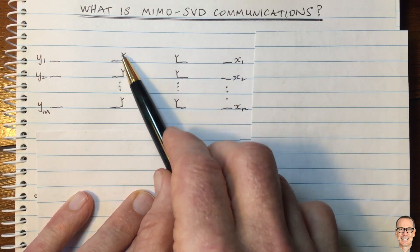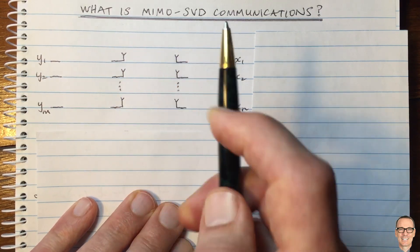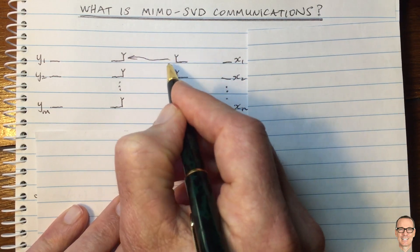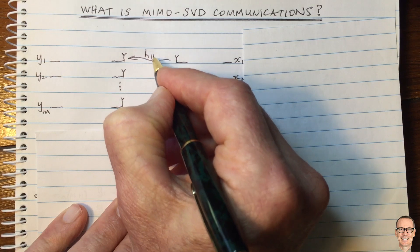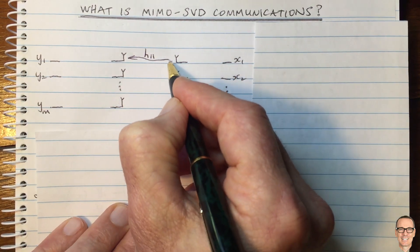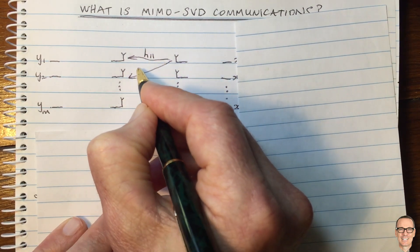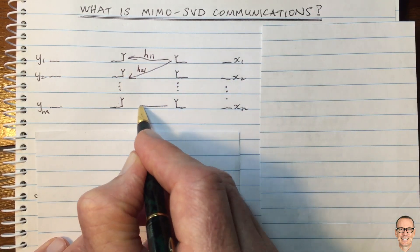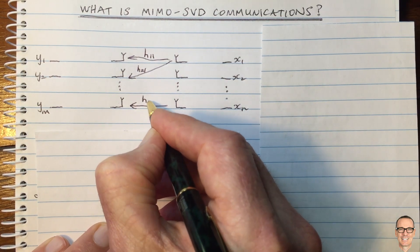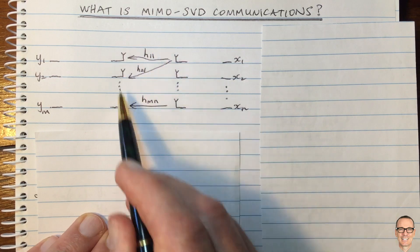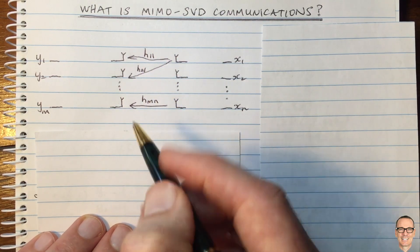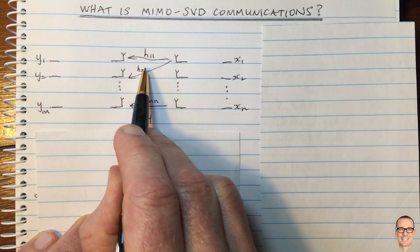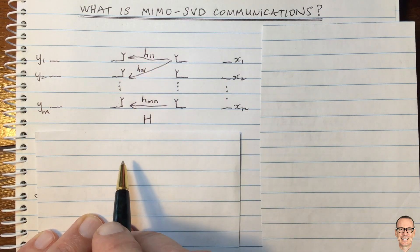Because it's a wireless channel, all of the antennas at the receiver are going to receive each one of those signals. So there'll be a path from antenna 1 to receiver 1, and we call this H11. There'll be a path from antenna 1 to receiver 2, and we call this H21, and so on. This path down here will be HMN, and we can put all of these elements into a matrix which we call H.